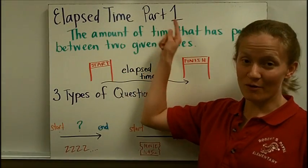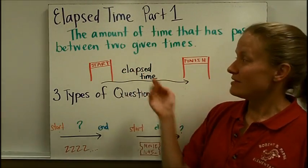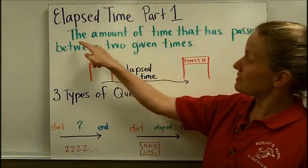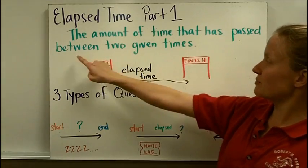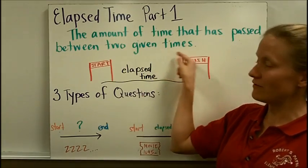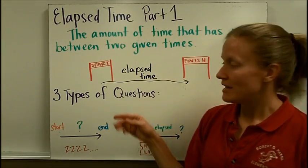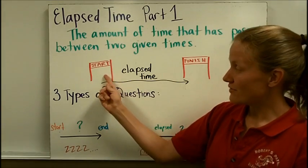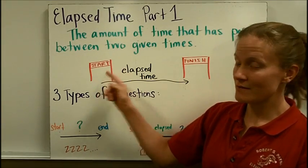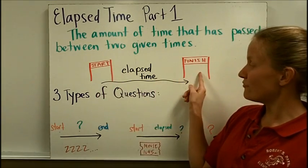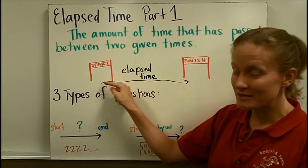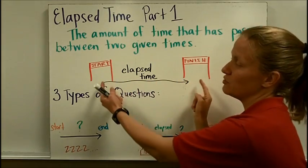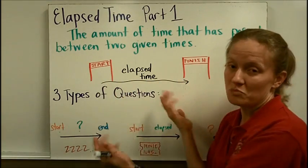Elapsed time, part one. The definition of elapsed time is the amount of time that has passed between two given times. If you are given a start time and a finish time, the elapsed time is the amount of time that has passed between those two points.